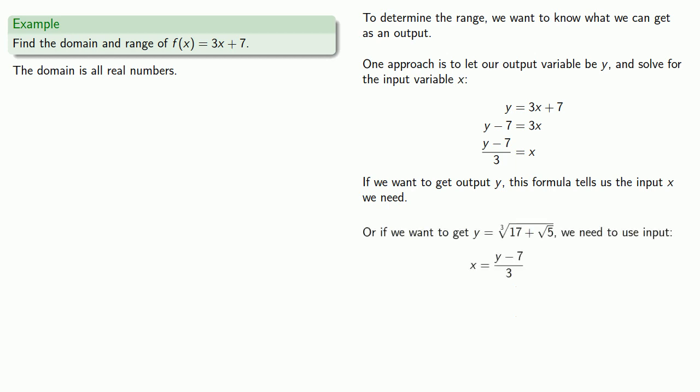Or if we wanted to get y equals horrible frightening mess, we need to use the input - well, this really isn't any different from the other two cases. x will be horrible frightening input minus 7 over 3. And that's just a number we won't worry about what its exact value is.